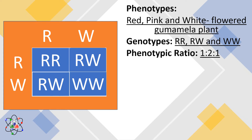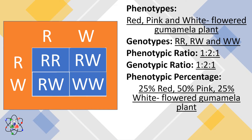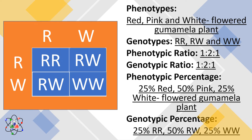Phenotypic ratio: 1 to 2 to 1, since we have 1 red, 2 pink, and 1 white-flowered gumamela plant. Genotype ratio: 1 to 2 to 1, since we have 1 Rr, 2 Rw, and 1 Ww. Phenotypic percentage: 25% Rr, 50% Rw, and 25% Ww.